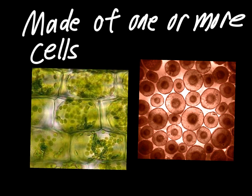Something to keep in mind is that all living things are made of one or more cells, so there are some living things that are single-celled. Protists are a common example — they're very tiny single-celled organisms, and we'll actually look at them later this year in some pond water samples.